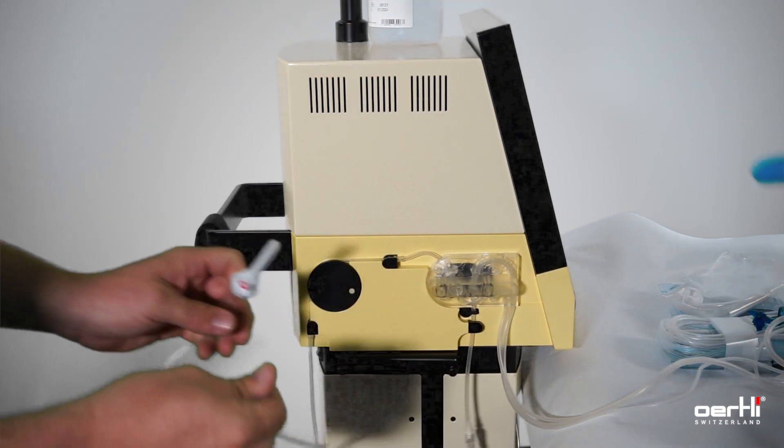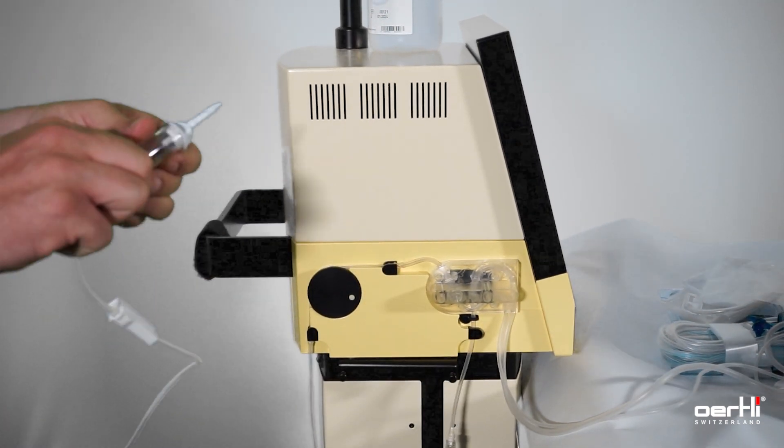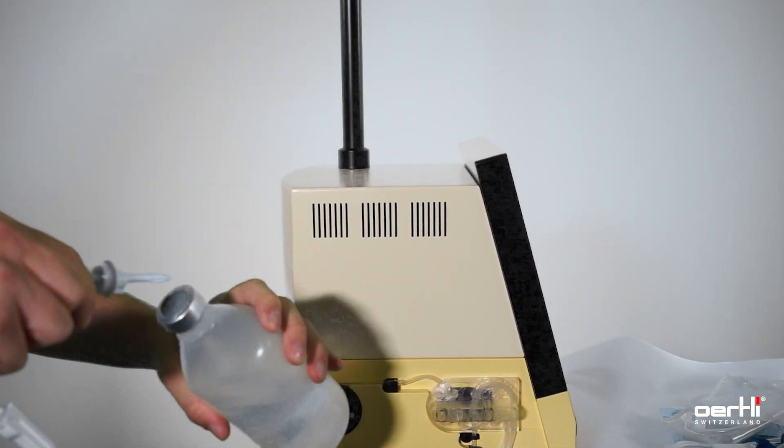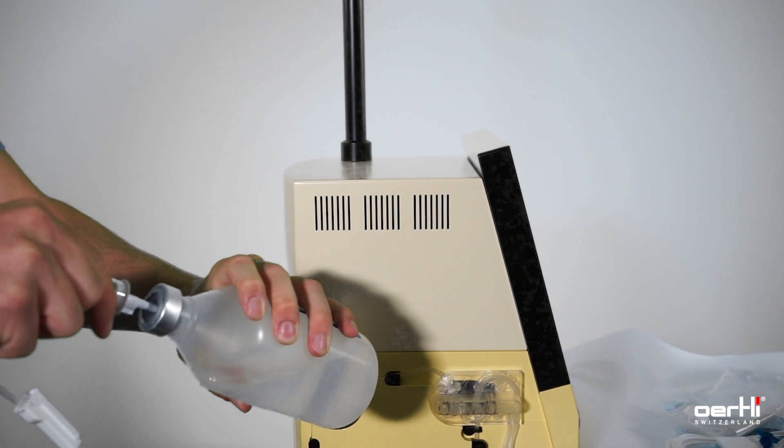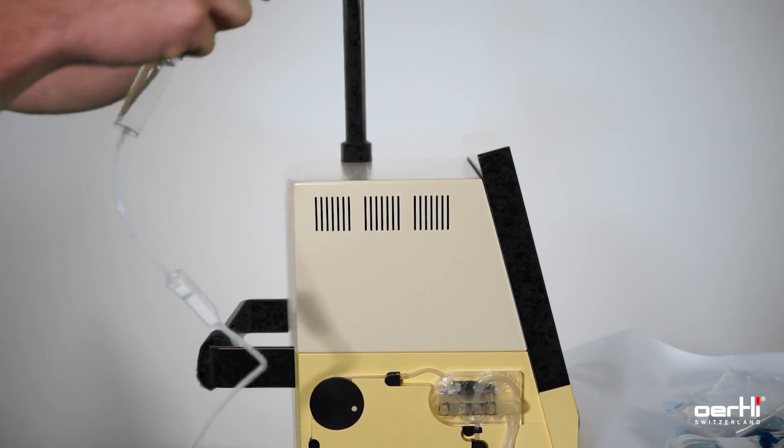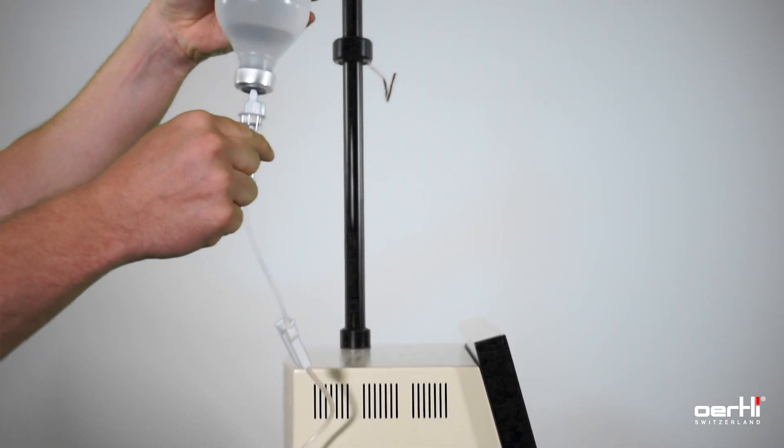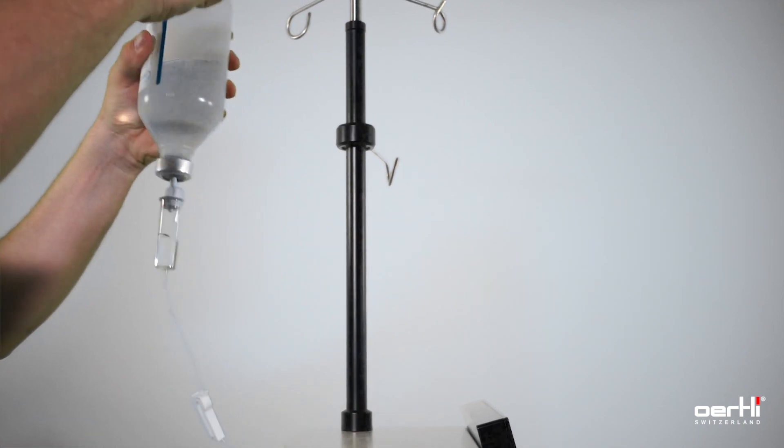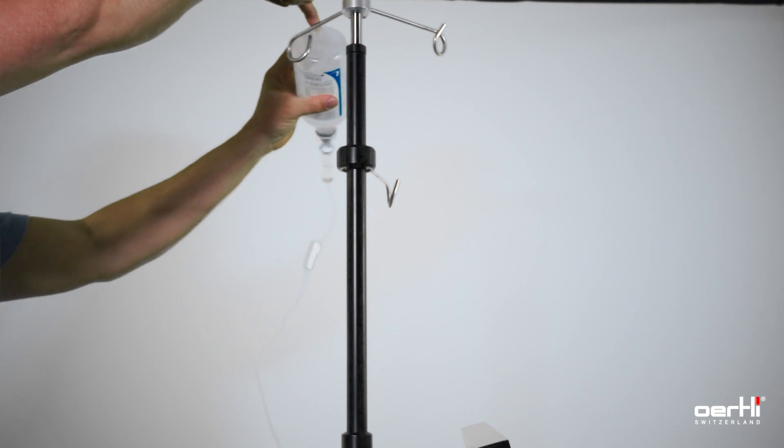Remove the cover on the drop chamber and put the drop chamber into the BSS bottle by holding the valve downwards. Fill the drop chamber approximately 50% and hang the bottle to the IV pole.